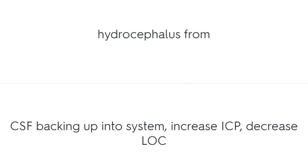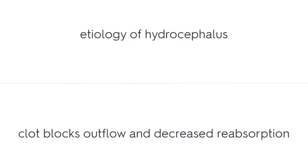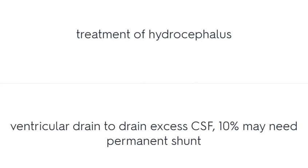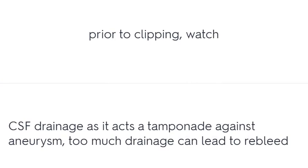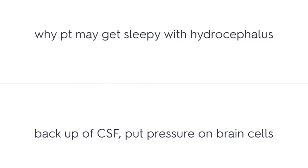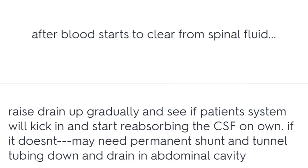Hydrocephalus occurs from CSF backing up into the system, increasing ICP and decreasing LOC. The etiology is that a clot blocks outflow and decreases reabsorption. Treatment includes a ventricular drain to drain excess CSF; 10% may need a permanent shunt. Prior to clipping, watch CSF drainage as it acts as a tamponade against the aneurysm — too much drainage can lead to rebleed. After blood starts to clear from the spinal fluid, raise the drain gradually and see if the patient's system will start reabsorbing CSF on its own; if not, the patient may need a permanent shunt with tubing tunneled down to drain in the abdominal cavity.